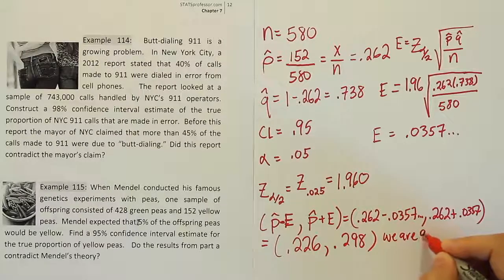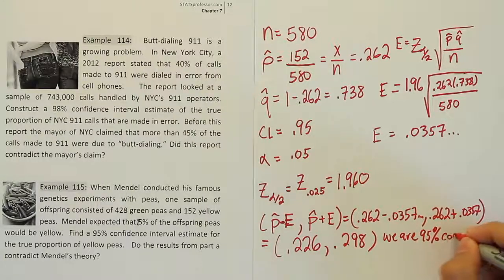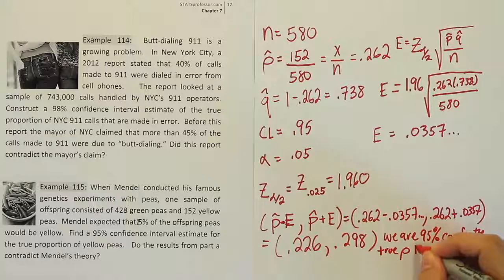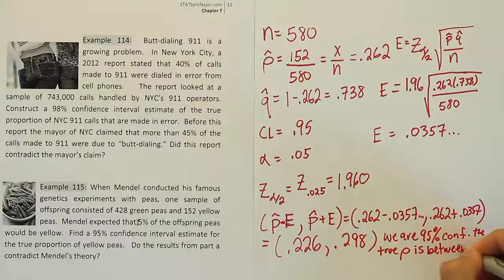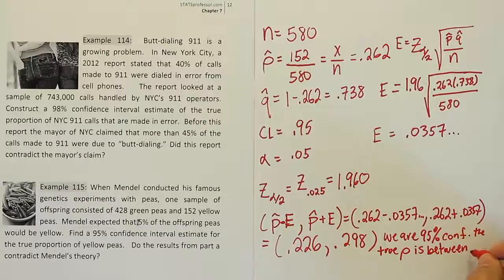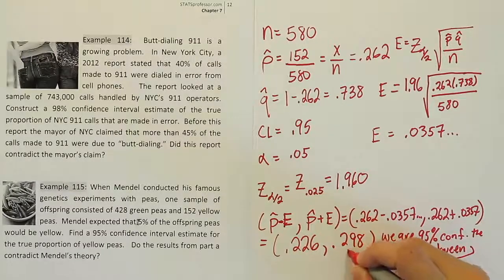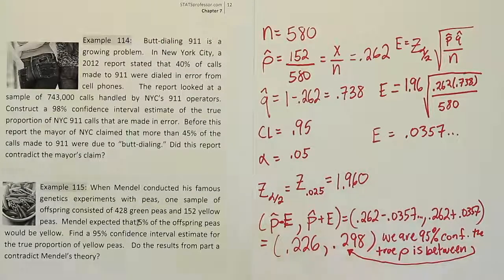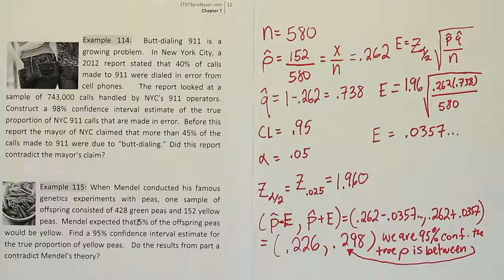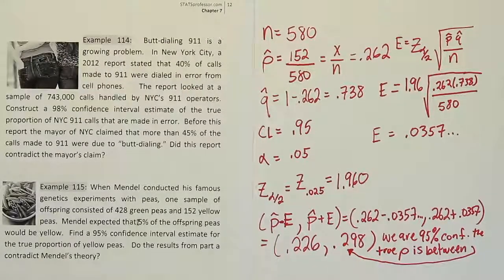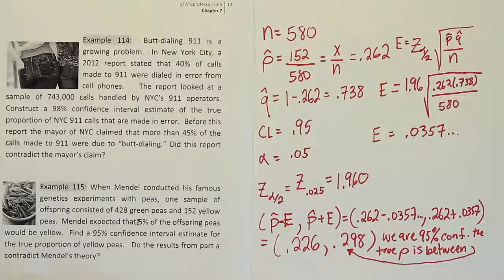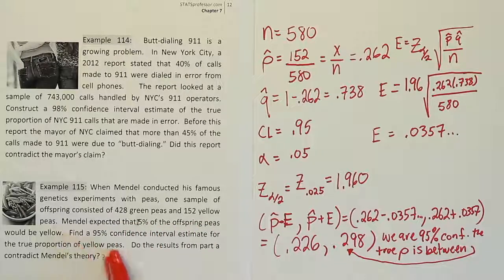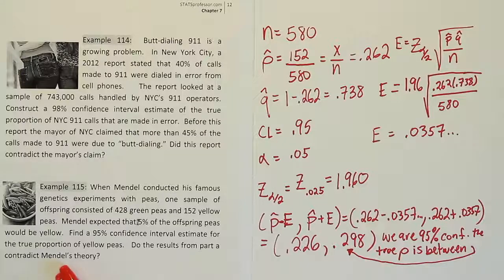So this is the range of values that we believe our proportion lies within. So we're saying we are 95% confident that the true proportion is inside the interval. We are 95% confident the true proportion is between these two values. Now, what we want to do then is answer the final question. What does that say about Mendel's theory? Is Mendel correct, or is he incorrect? Or can we not say conclusively one way or the other? Well, it says Mendel expected 25% of the offspring peas to be yellow. So the first thing we want to answer is this: Do the results from part A contradict his theory?